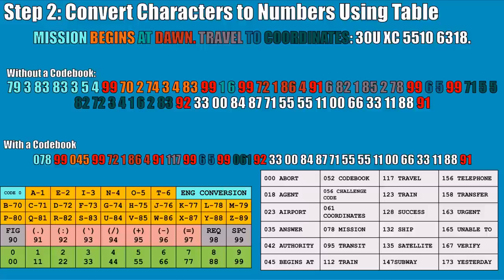We can convert the rest of the message using our conversion table, including punctuation and spaces. Some of you might notice at the bottom of the conversion table there are a couple of duplicates — the terminology for space is the number 99, but 99 is also how you delineate the number nine. This can get a little confusing, but it works because nines are visually easy to distinguish from spaces by context. If you have to reuse some numbers, just make sure the context remains clear.